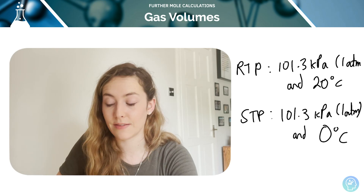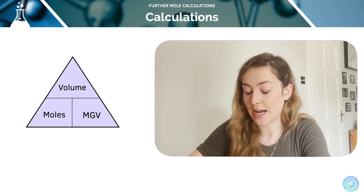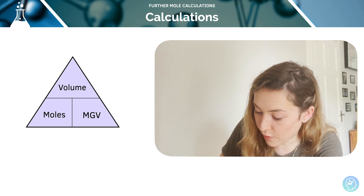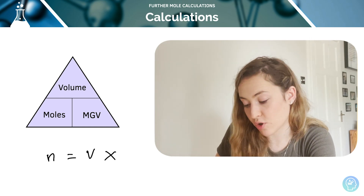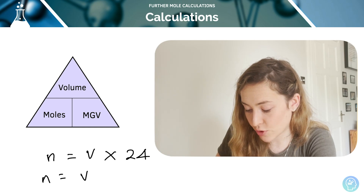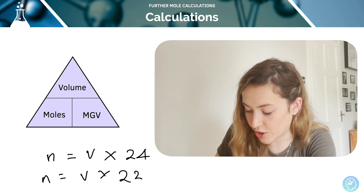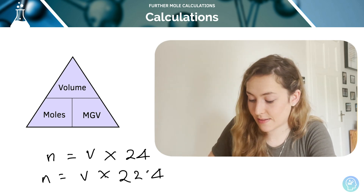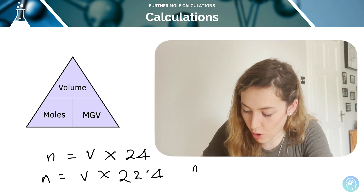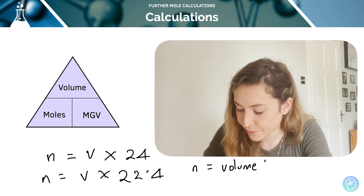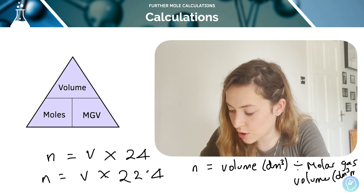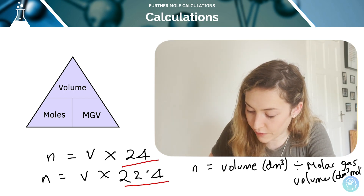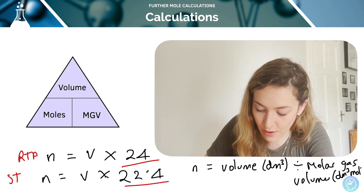There's a triangle formula again. The number of moles equals volume divided by the molar gas volume — at RTP that would be 24, at STP it's 22.4. Gas volumes must be in decimetre cubed. So moles equals volume in dm³ divided by the molar gas volume in dm³ per mole, with the appropriate value depending on whether it's RTP or STP.